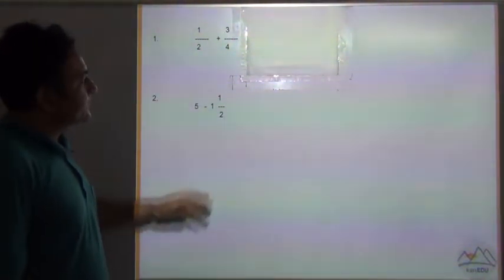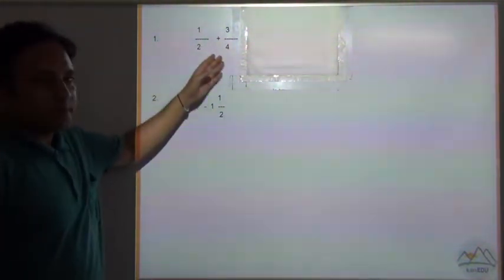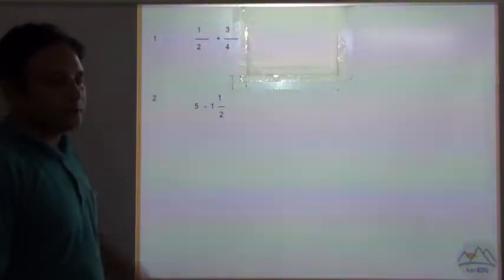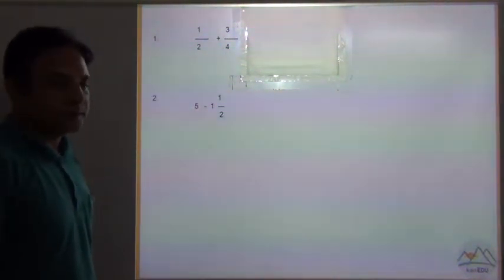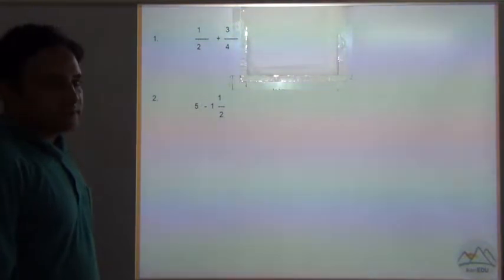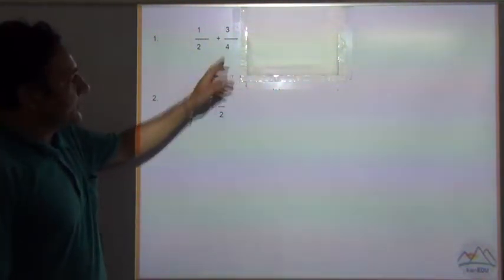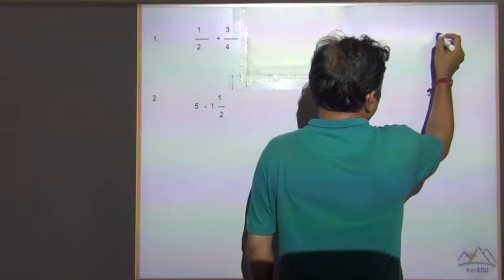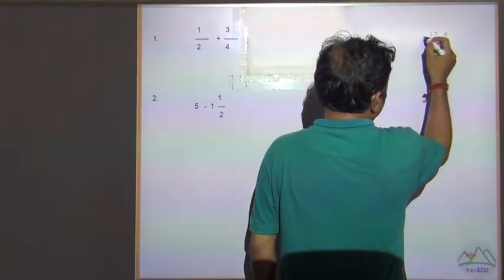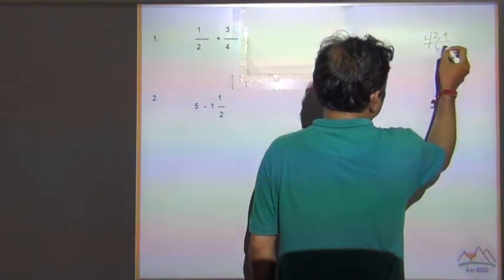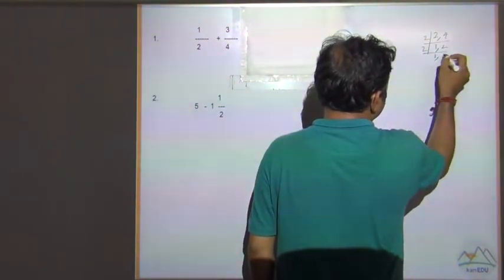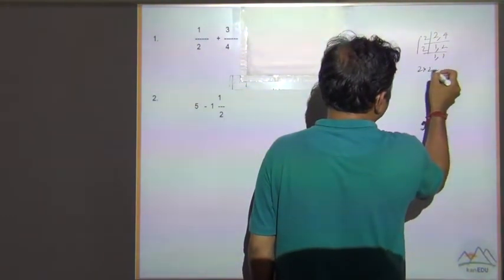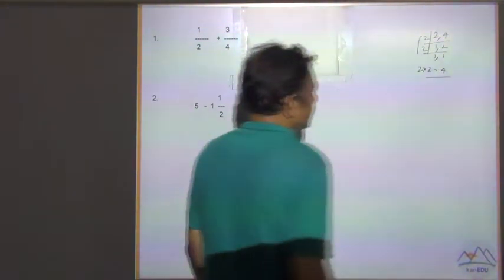The rule says to first convert all numbers into fraction form — numerator and denominator. This is already in numerator and denominator form. Next, find the LCM of the denominators. For 2 and 4: 2 multiplied by 2 is equal to 4, so the LCM is 4.